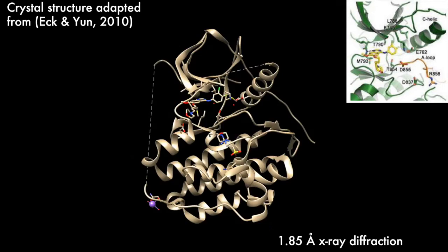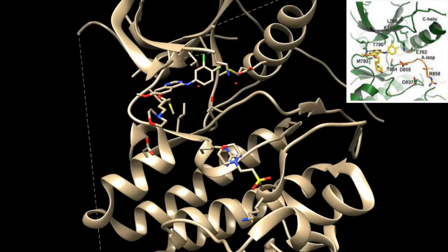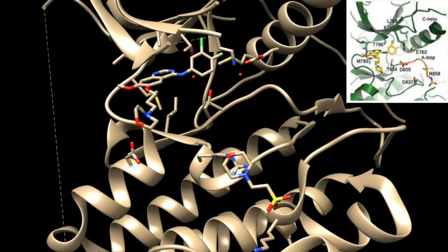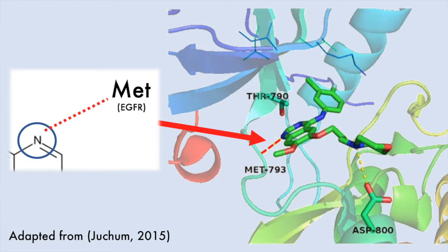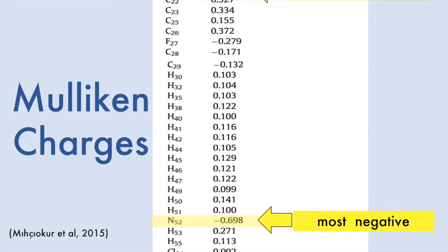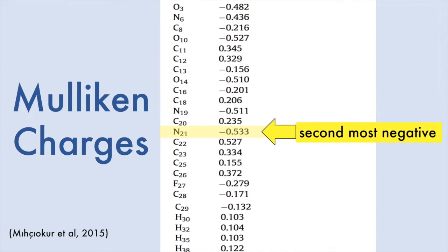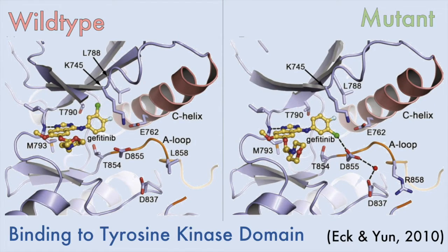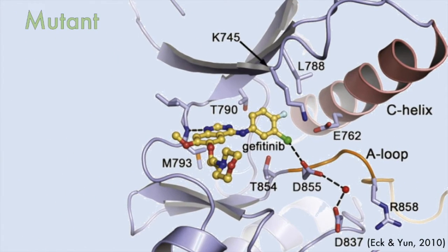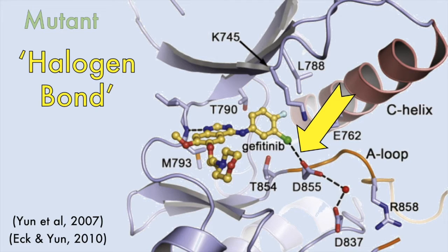Youn and colleagues elucidated the crystal structure of gefitinib bound to the wild-type receptor and L858R mutants. In both, the methionine-793 residue in the critical hinge region of EGFR hydrogen bonds to a nitrogen atom on the gefitinib-quinazoline ring. This nitrogen is a strong hydrogen bond acceptor as it has the inhibitor's second most negative Mulliken atomic charge, which denotes the electron population around each atom. However, the replacement arginine also allows for a halogen bond from the chlorine on gefitinib to aspartate-855, which initiates a stabilizing hydrogen bonding network.